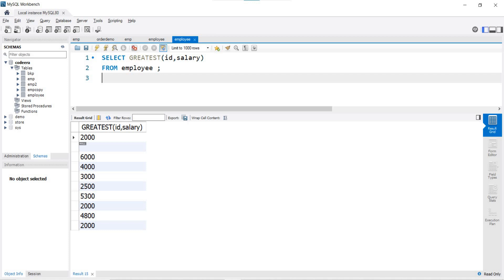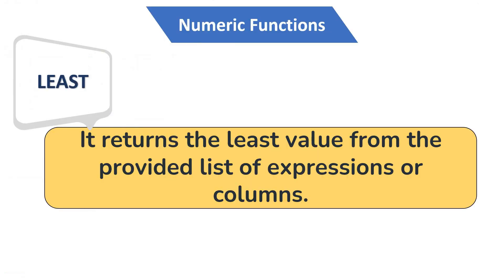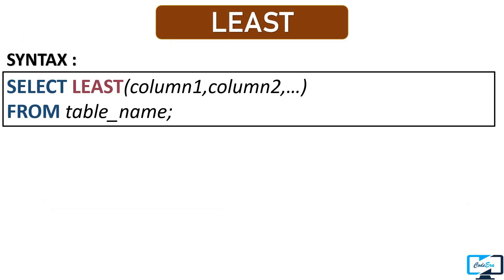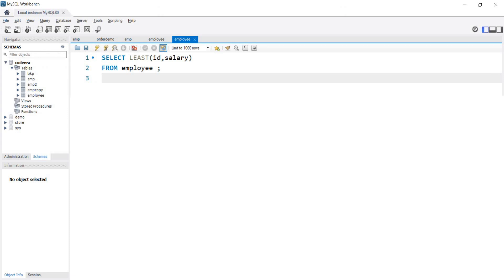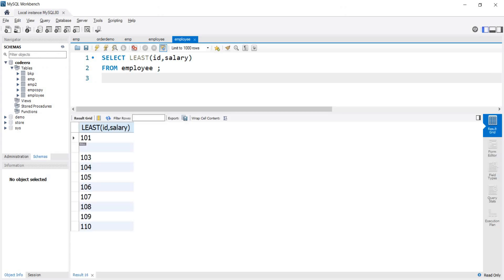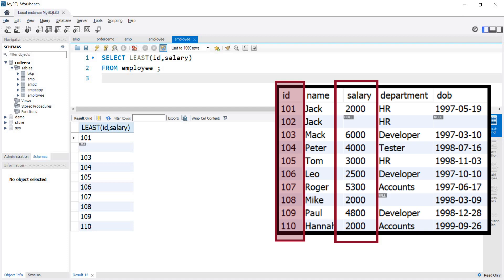If you want to find the lowest number, we have a numeric function called LEAST. This function returns the least value from the provided list of expressions or columns. Its syntax is similar to the GREATEST function. After executing the same query using LEAST, we get all values from the id column, because all ids are smaller than salary. This is how you can use the GREATEST and LEAST functions.